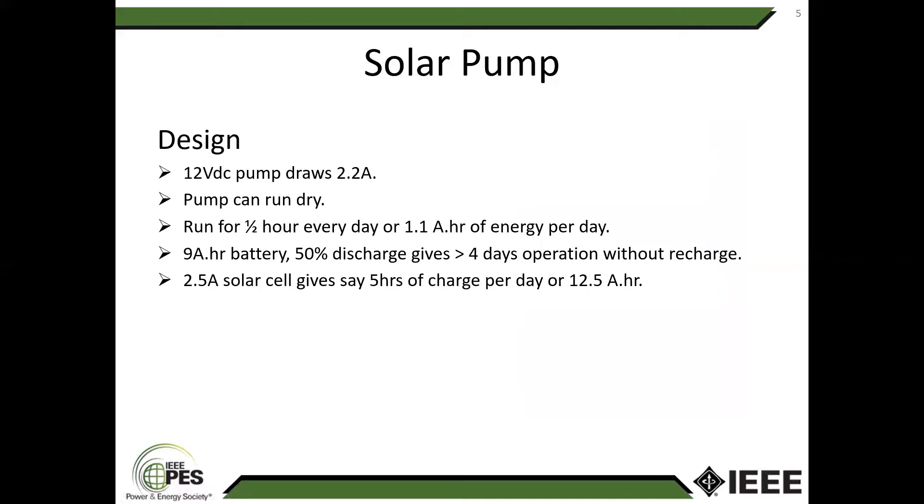So the design: there's a 12 volt pump and running at full rated speed it draws about 2.2 amps. It's a bilge pump for a boat and it's designed so it can run dry, so I don't have any worry about running that pump when there's nothing coming out. Currently I run it for about half an hour every day, so at 2.2 amps that's about 1.1 amp hours of energy per day.